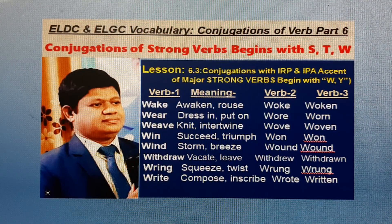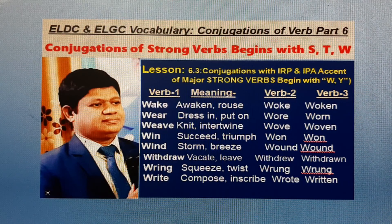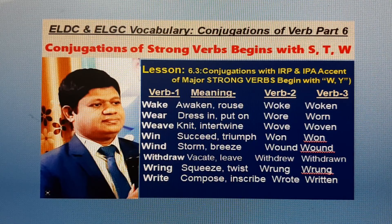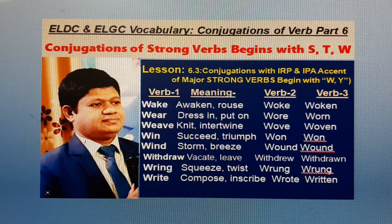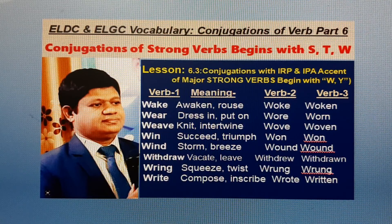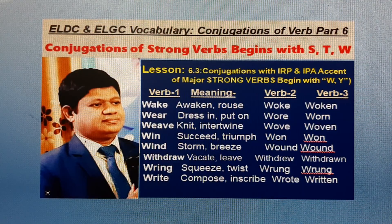Verb B1: Withdraw. English meaning: Back out, leave, depart. Bangla meaning: Pruttharkwara. B2: Withdrew. B3: Withdrawn. Verb B1: Wring. English meaning: Squeeze, twist, mangle. Bangla meaning: Mojrano. B2: Wrung. B3: Wrung. Verb B1: Write. English meaning: Compose, inscribe, engrave. Bangla meaning: Laka. B2: Wrote. B3: Written.